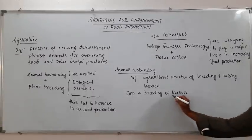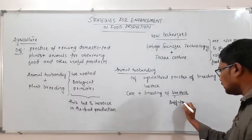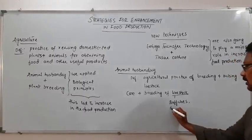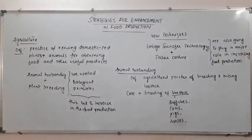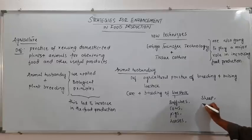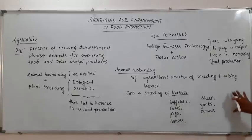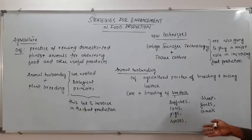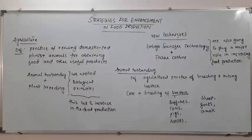What is livestock and what animals are included? The livestock includes animals like buffaloes, cows, pigs, horses, sheep, goats, and camels — all grouped under the one term 'livestock.' These are mainly reared for purposes of meat, milk, and wool. Other branches included under livestock are poultry, which simply means the rearing of birds.